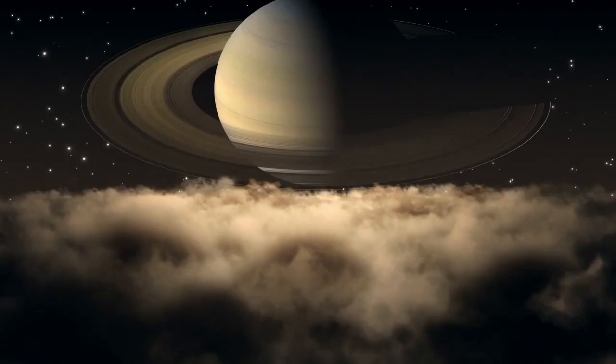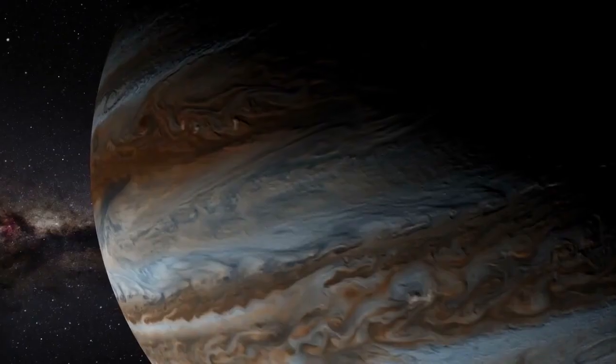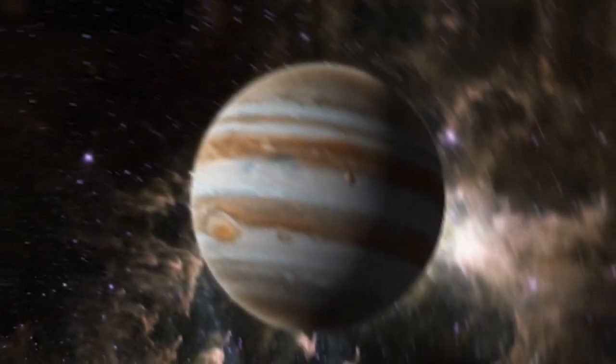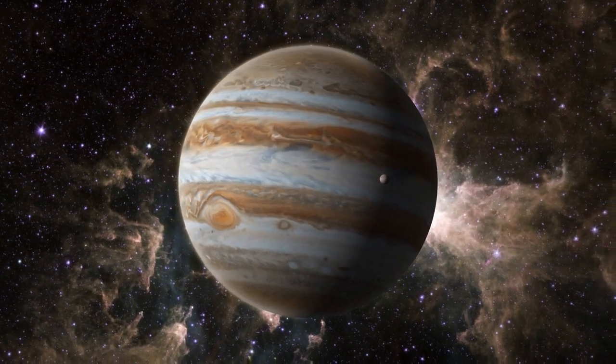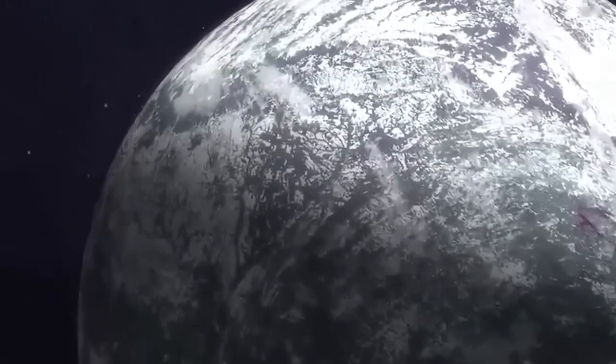Discovered in 2011, WASP-39b's mass is about the same as Saturn's, and roughly a fourth of Jupiter's, while its diameter is 1.3 times greater than Jupiter's. Since the exoplanet is so close to its star, it takes just over four Earth days to make a full circle.